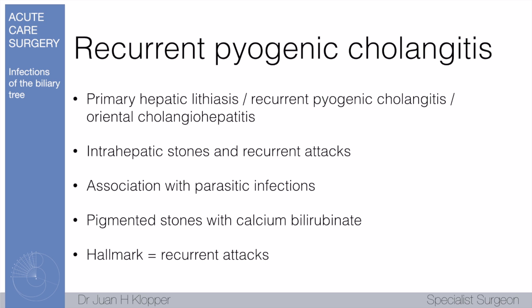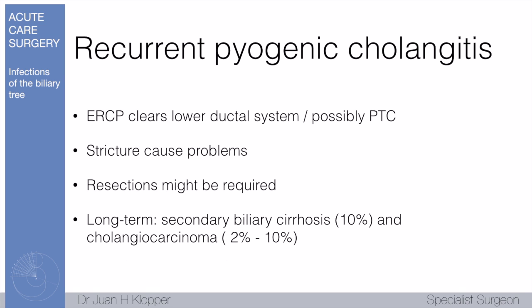Lastly, recurrent pyogenic cholangitis — also known as primary hepatic lithiasis or oriental cholangiohepatitis — involves intrahepatic stones and recurrent attacks of cholangitis. There is an association with parasitic infections; hallmark pigment stones are calcium bilirubinate. The hallmark is repeated attacks, treated as discussed. Fibrosis may develop; about 10% develop secondary biliary cirrhosis and up to 10% may develop cholangiocarcinoma. ERCP or PTC is used for drainage, but if strictures cause severe problems, segmental resections of the liver may even be necessary.